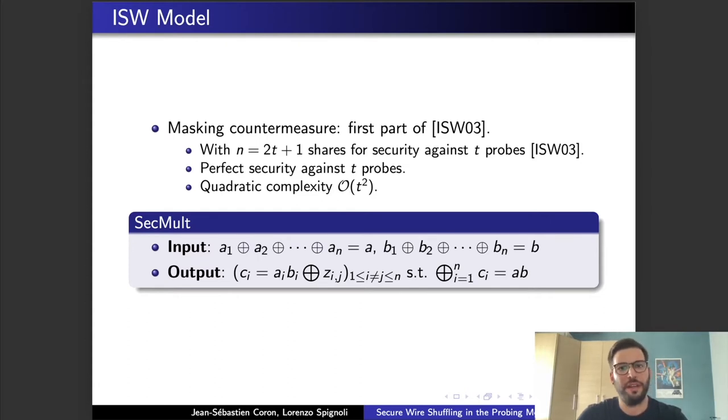In their paper they proposed a construction for both perfect privacy and statistical one. They achieved the first case, the perfect security against T-probes, through the now well-known masking countermeasures, which is, along the circuit now the gates are not dealing directly with the sensitive data A, rather than with the N out of N secret sharing.